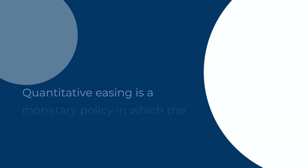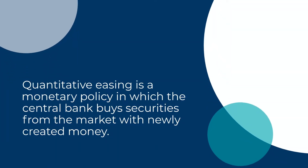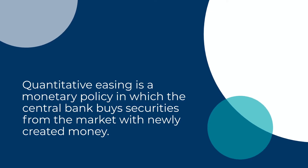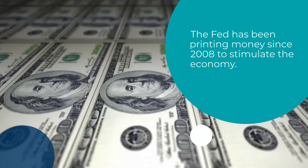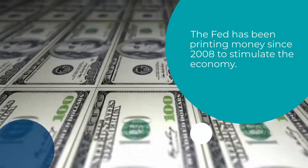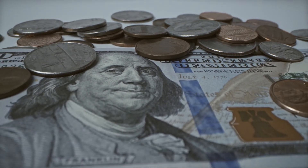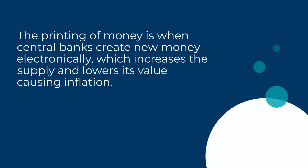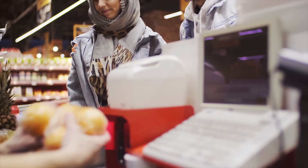Quantitative easing is a monetary policy in which the central bank buys securities from the market with newly created money. The Fed has been printing money since 2008 to stimulate the economy. The printing of money is when central banks create new money electronically, which increases the supply and lowers its value.